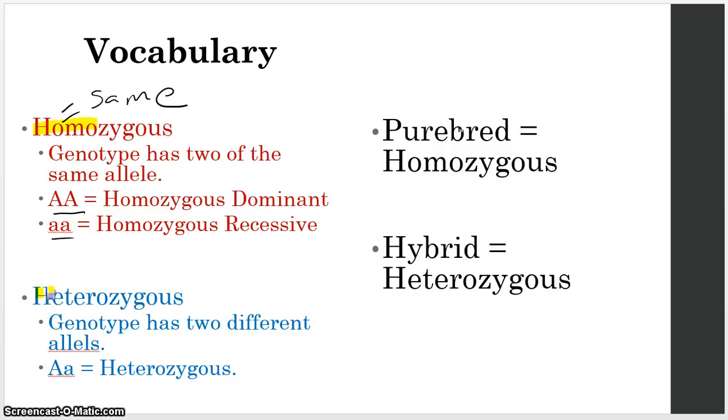The other word that we have is heterozygous. And remember we said earlier that hetero means different. So in this case, if we're going to have a heterozygous genotype, it has to be one dominant and one recessive. Some other words that you might see in your homework are these words purebred, which means homozygous, and then hybrid, which means heterozygous.